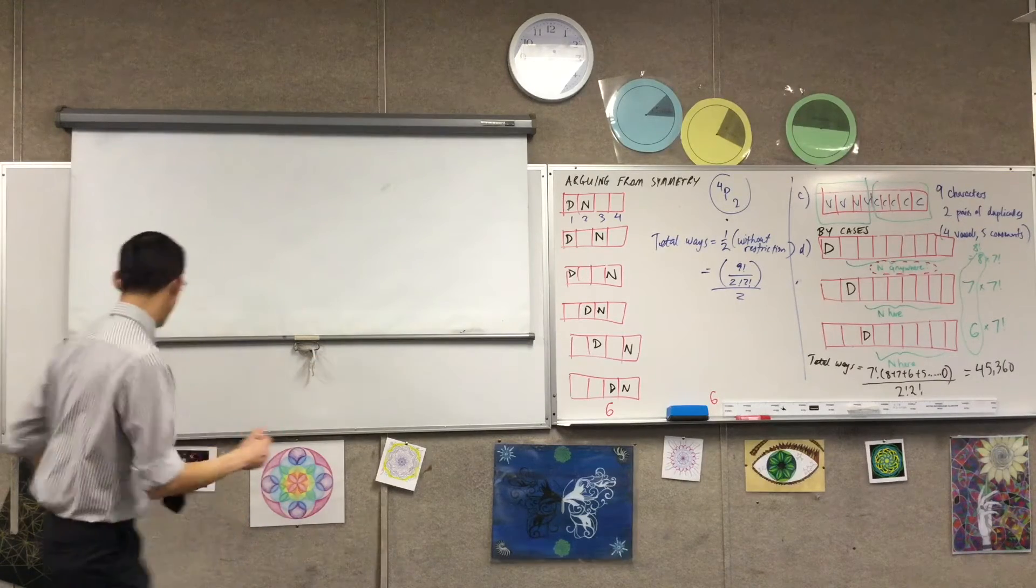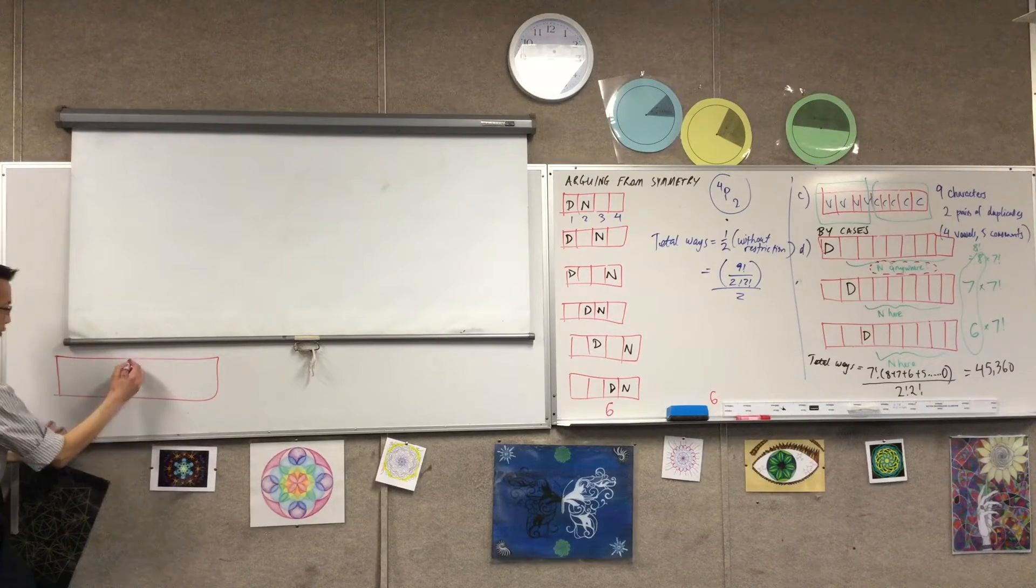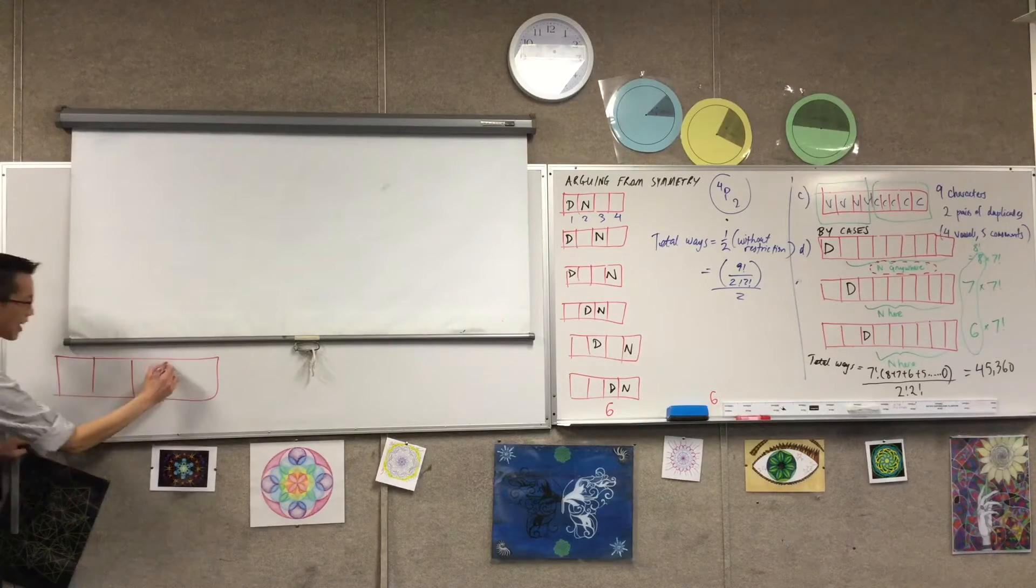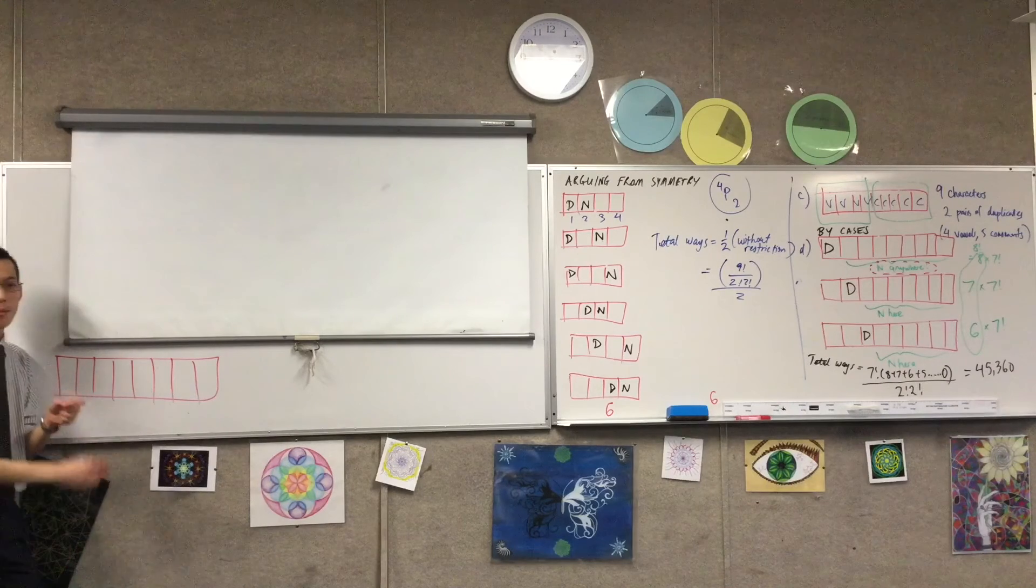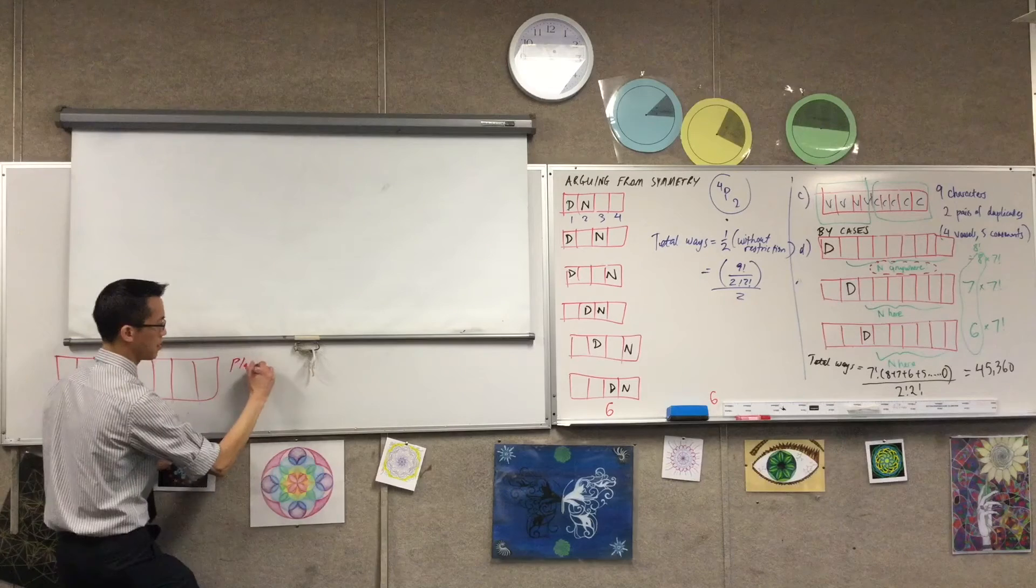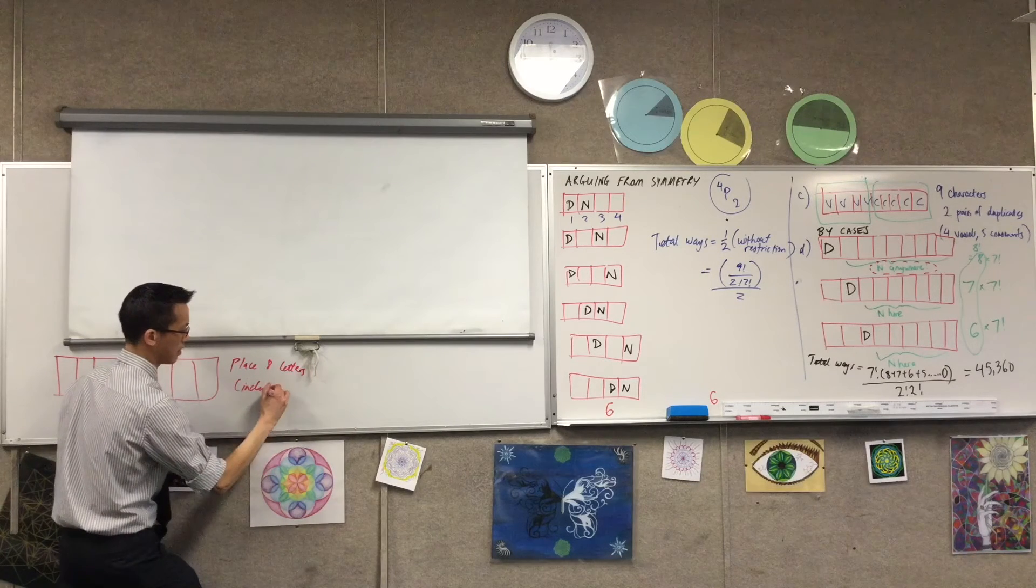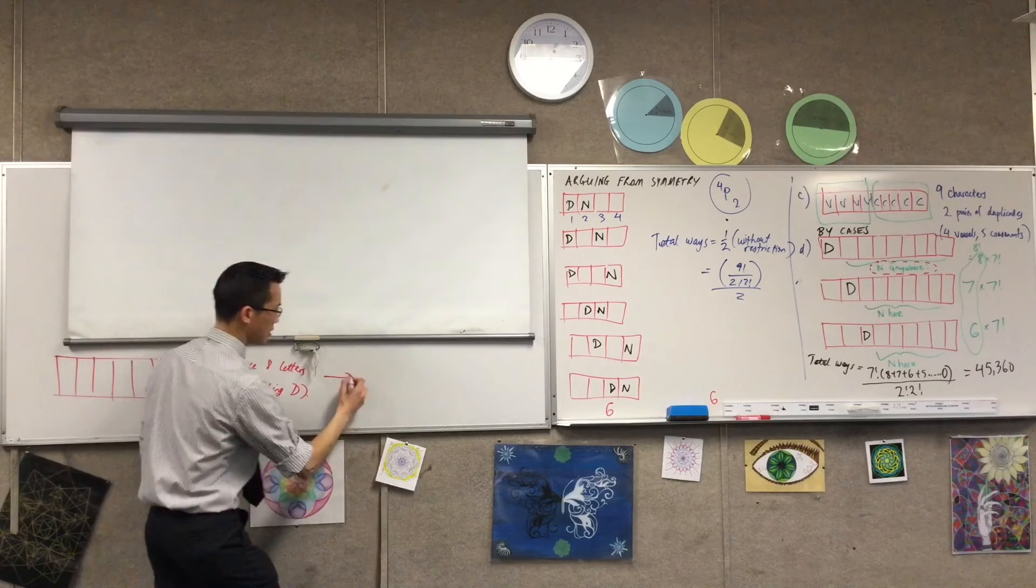There are eight factorial, right? So you've got your first, the first box that you've got there, right? You might have, it's a bit hard to notice because at a glance, eight and nine look the same, okay? You've got eight slots there, okay? So first, I'm just going to place all these other letters, right? So place eight letters, including the letter D, okay? So this is eight factorial ways.